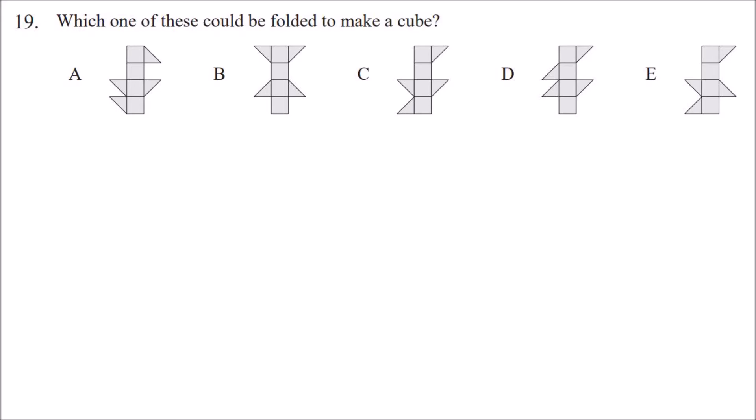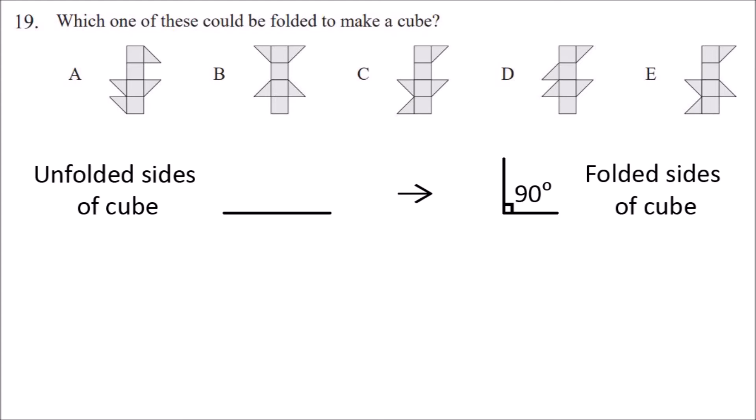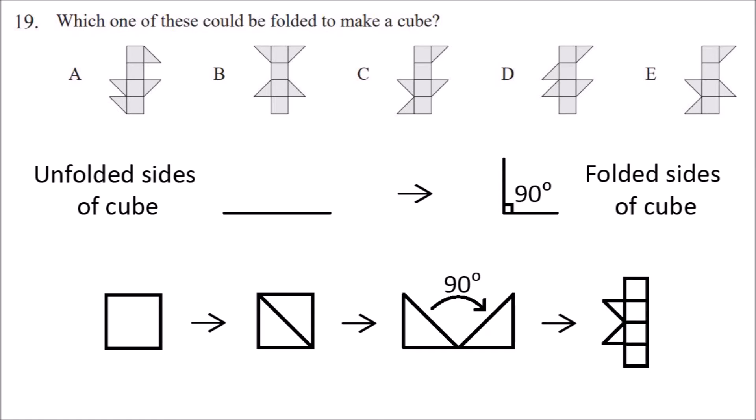If the triangles are next to each other, then when you fold the net to make the cube, the triangles will be 90 degrees to each other. So if we take a square and cut it in two to make two triangles, and then rotate one of the triangles by 90 degrees from one of the corners where the two triangles meet, you can see that the two triangles would form this shape. So if the triangles are next to each other, they have to be in this configuration.